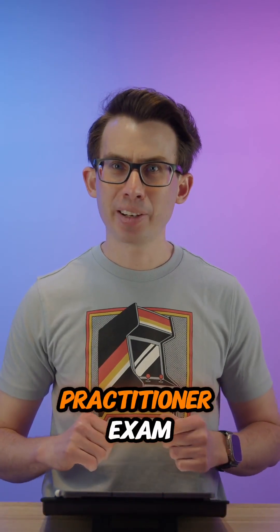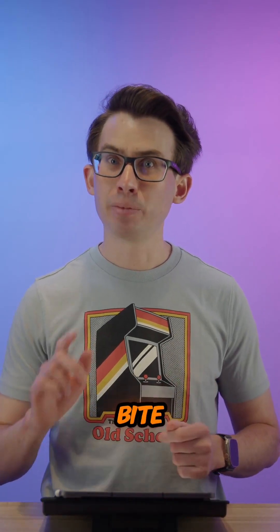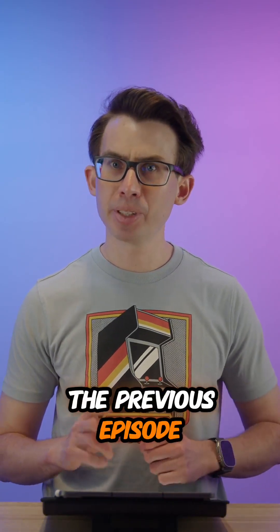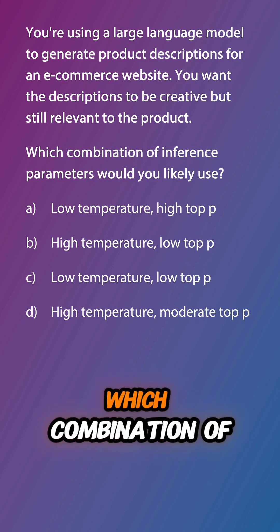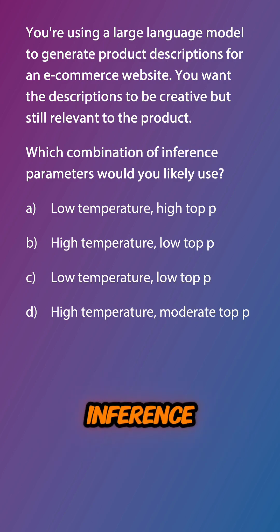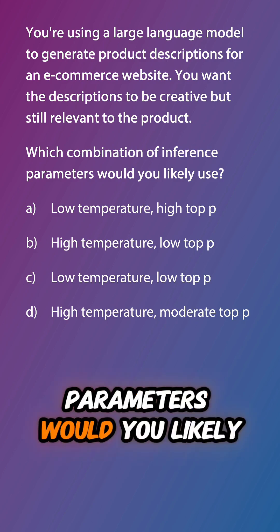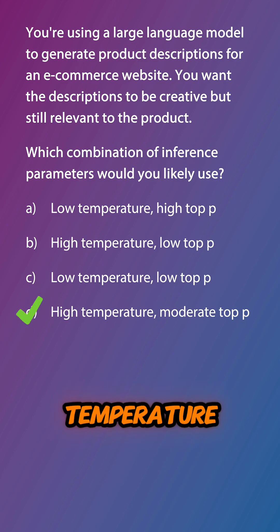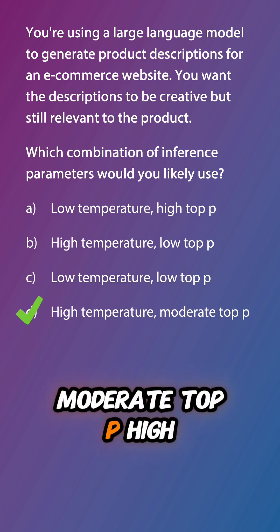Welcome back to another AI Practitioner ExamByte, reviewing the question from the previous episode asking which combination of inference parameters would you likely use. The answer is D: high temperature, moderate top P.